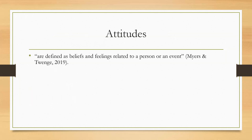Attitudes — what are they and where do they come from? The book defines attitude as beliefs and feelings related to a person or an event. Where do those beliefs and feelings come from? We've talked about this over the past couple of weeks: they come from upbringing, personal thoughts, perception, experiences, and all different types of things.